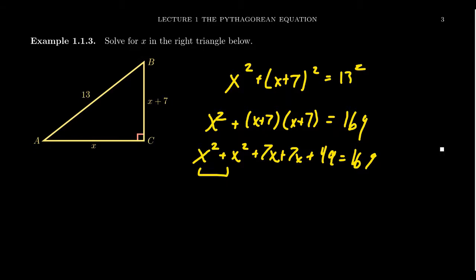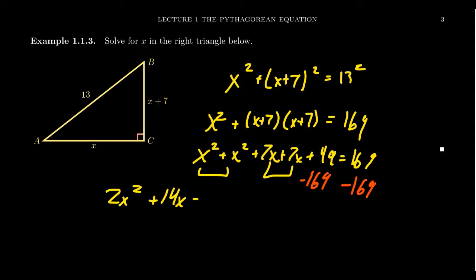We subtract 169 from both sides — the standard technique for solving a quadratic equation — ending up with 2X² + 14X − 120 = 0. Factoring out the 2 gives 2(X² + 7X − 30) = 0.